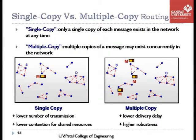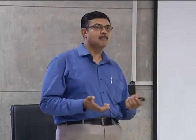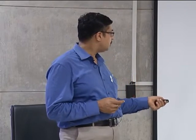In multi-copy, delivery delay is lower and probability is higher that the message will reach the destination, offering high robustness. However, a lot of resources get wasted — the same message copy M is being replicated and forwarded across the network, wasting network resources, especially buffer space and bandwidth, and potentially inviting collisions. So we improve delivery probability at the cost of wasting many network resources.